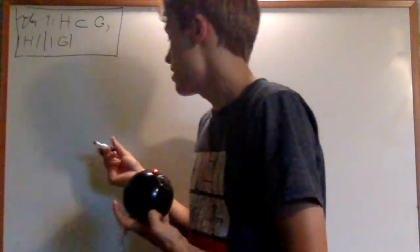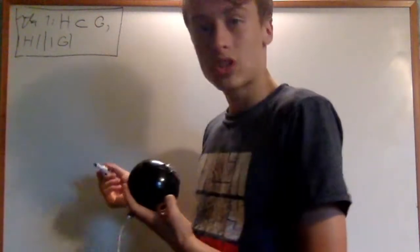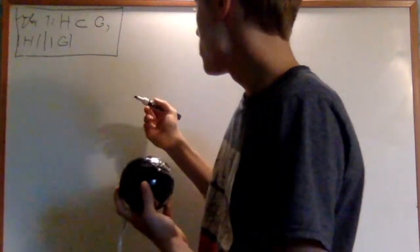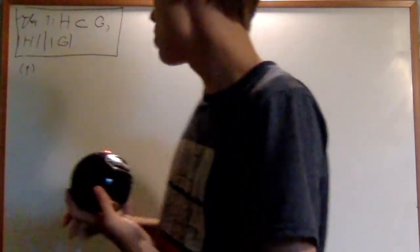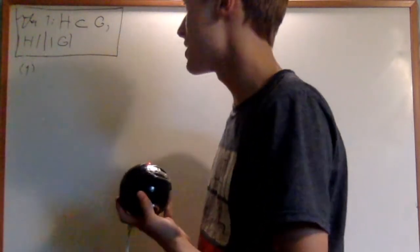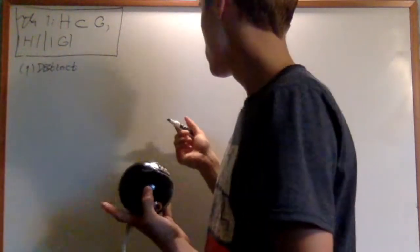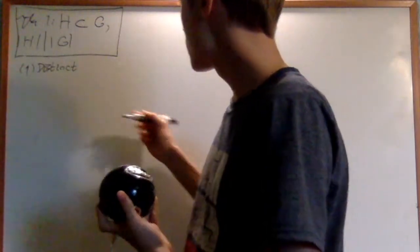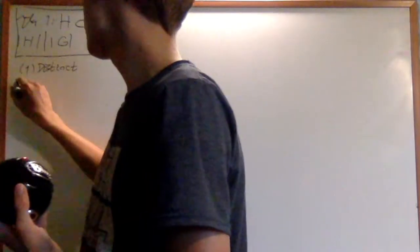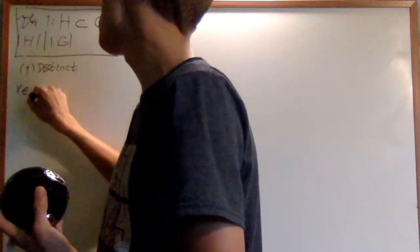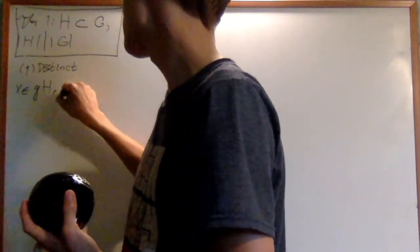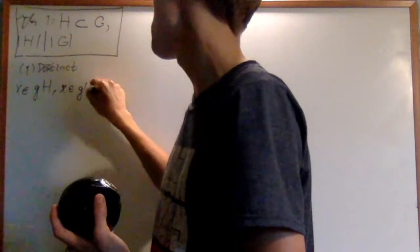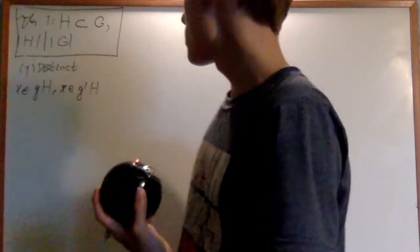The proof of this involves cosets. The first fact we're going to use is that all of the cosets of H are distinct. Suppose I had x, an element of two cosets: gH, and x is also going to be an element of g'H.